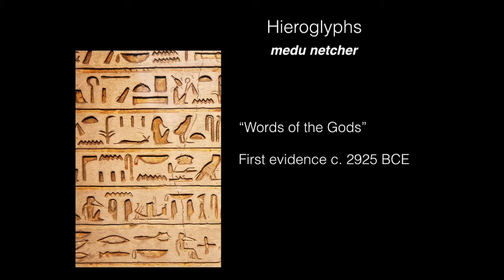By the 5th century BCE, Demotic script was used as the business and everyday language. It was one of those ways in which simpler, more everyday language began to undermine the need to use the more archaic form of hieroglyphs.